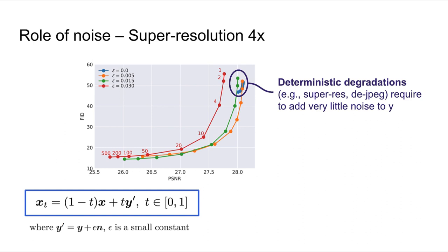And this is actually the case when the degradation is deterministic. As we add very little noise, for example, here in the orange curve, where the noise is 0.005 compared to an image that is normalized to be between minus 1 and 1, then we start getting results with much better FID scores. Please check our paper for more details.